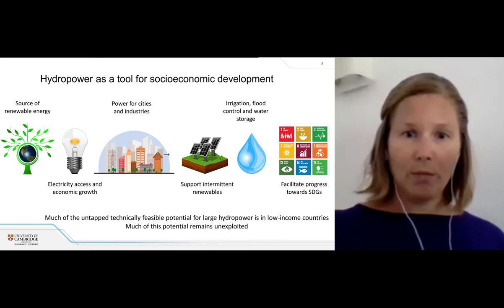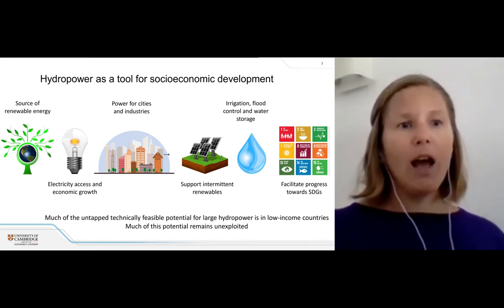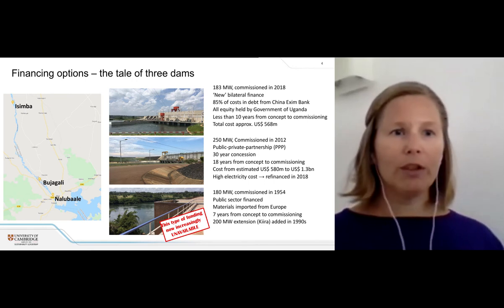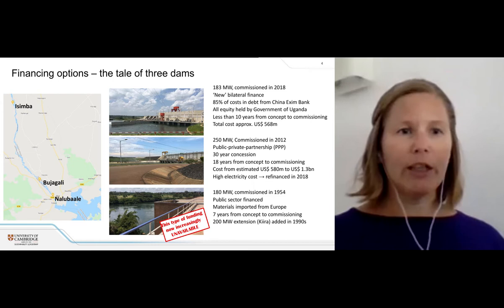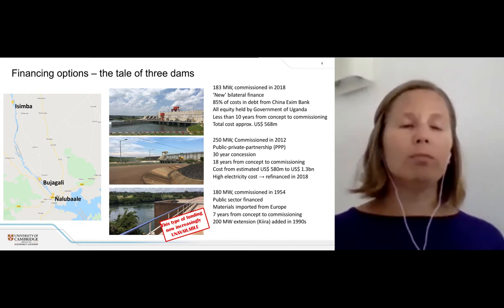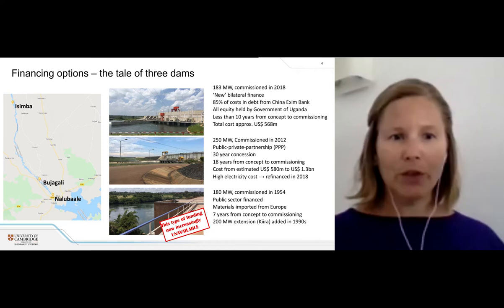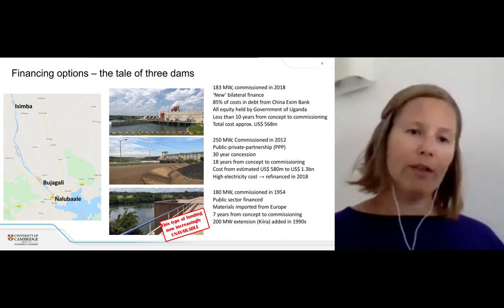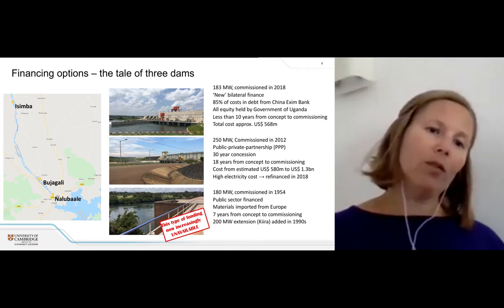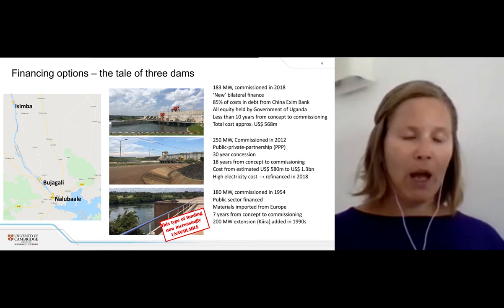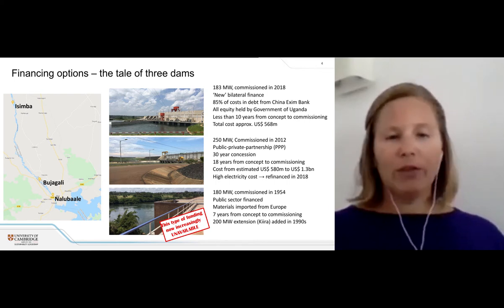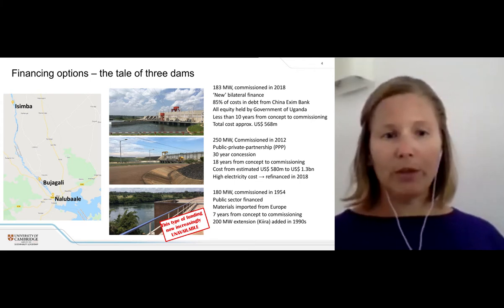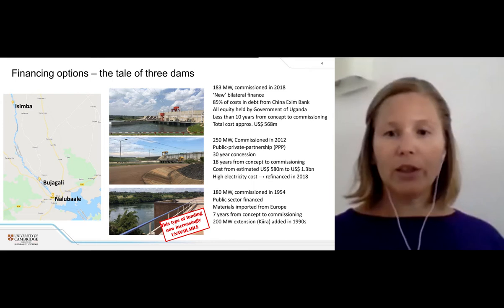When it comes to different ways that projects can be financed, I'm going to give you a brief introduction by way of a tale of three dams. These three dams are located in Uganda, on the White Nile flowing from Lake Victoria. All of this is available in much more detail in our most recent publication on the Future Dams website, so I'll try not to go into too much detail here.